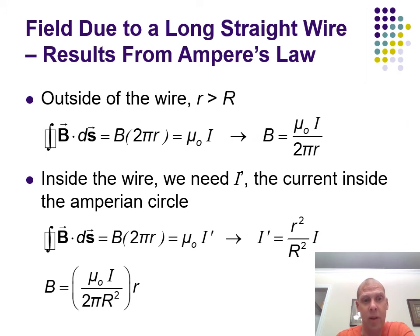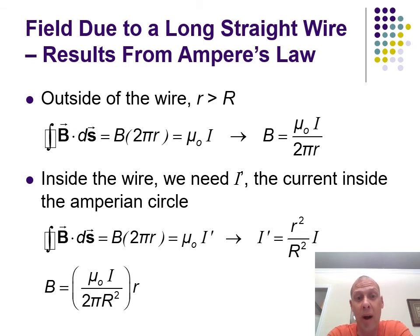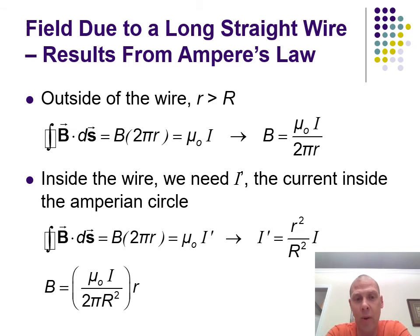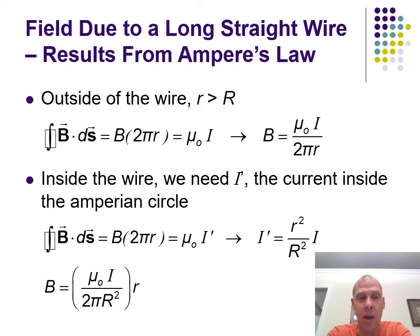The closed loop integral of B · dS gives us dS as the arc all the way around the wire, which is just 2πR, and that equals μ₀ times I. So B = μ₀I / (2πR). All that complex Biot-Savart calculus becomes much easier using Ampere's law for an infinitely long wire — there's no accounting for the wire length or sine theta terms.